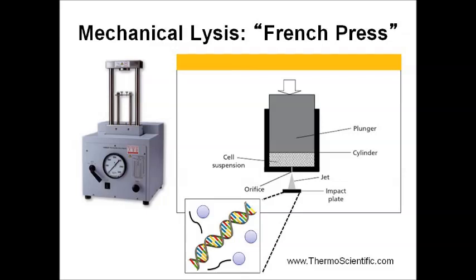Another form of mechanical lysis is the French press. A container applies high pressure via a piston or plunger to force a cell suspension through a very small orifice. Cells are forced to shrink in size to fit through, and as they pop out on the other side, they reform to their normal size — this burst of expansion rips the cells apart. All cellular content is then collected for testing.